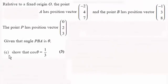Hi there. Now for part C here we're given the angle PBA is theta and we've got to show that the cosine of theta equals a third.